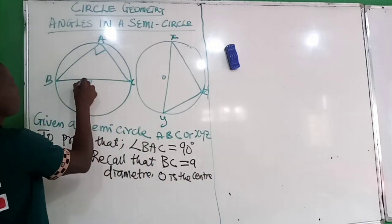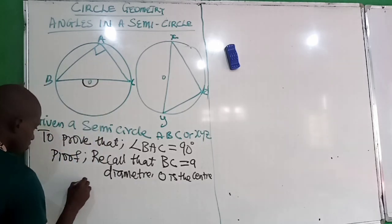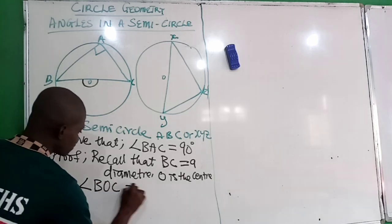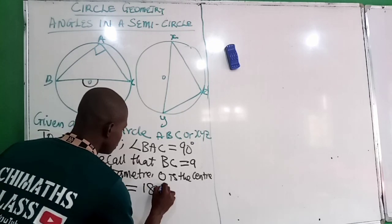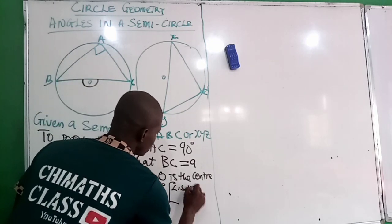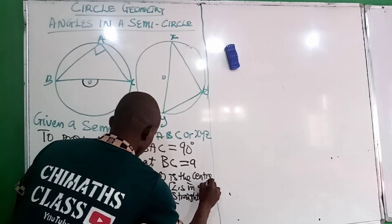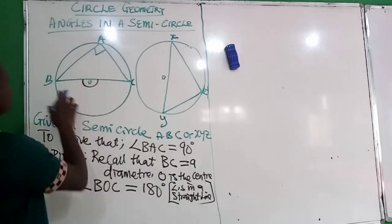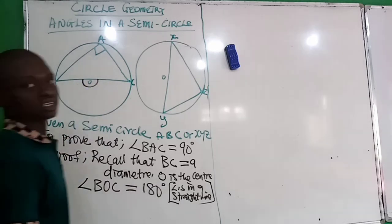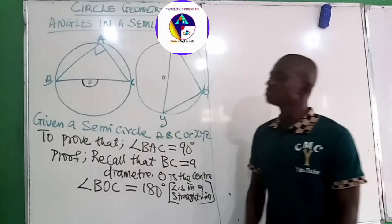If you observe, there is an angle formed here and an angle formed here. Therefore, angle BOC is equal to 180 degrees — angles on a straight line. Angle BOC is equal to 180 degrees, angles on the straight line.